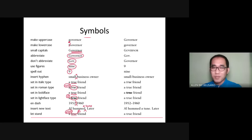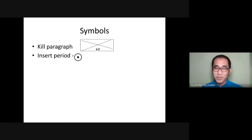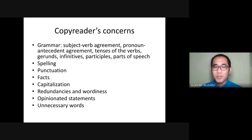Other symbols cover how to kill a paragraph and how to insert a period. Whenever you feel that a paragraph is irrelevant, you box it, mark an X, then write 'kill' below. For inserting a period, you use the symbol for period then insert.